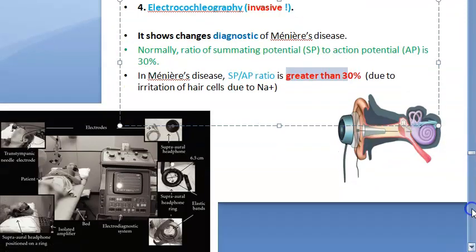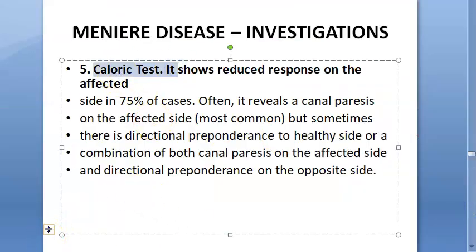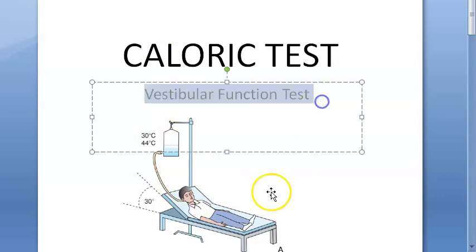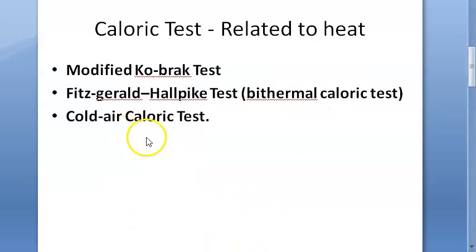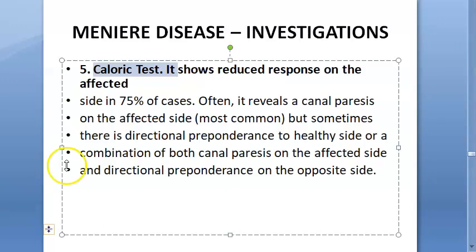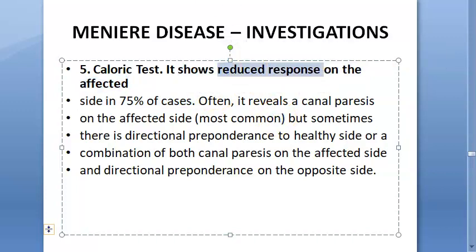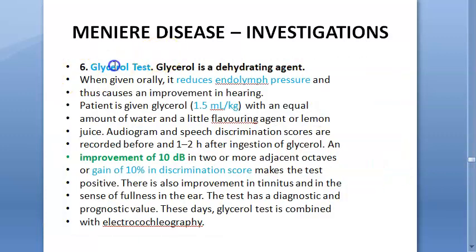The caloric test assesses vestibular function by introducing cold and warm water into the ear and checking for nystagmus. In Meniere's disease, it shows a reduced response on the affected side in 75% of cases. Sometimes there is also directional preponderance.